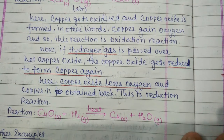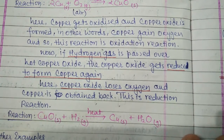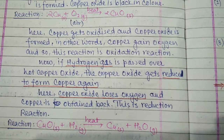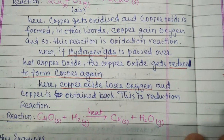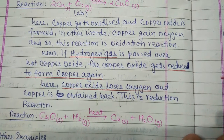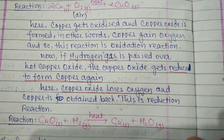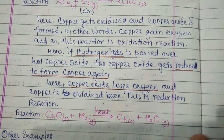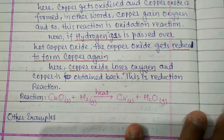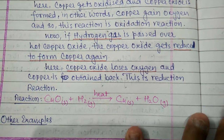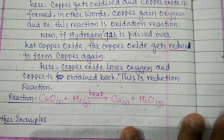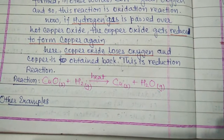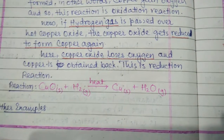Now, if hydrogen gas is passed over hot copper oxide, the copper oxide gets reduced to form copper again. We get copper powder back because hydrogen gas reacts with oxygen to form water steam. Copper oxide loses oxygen and copper is obtained back. This is the reduction reaction because oxygen is removed.